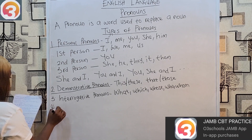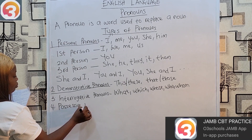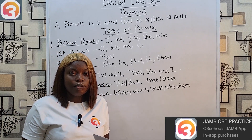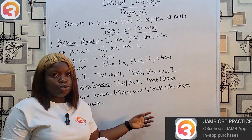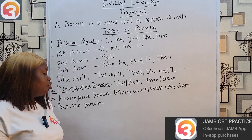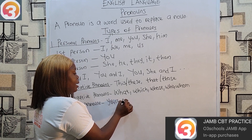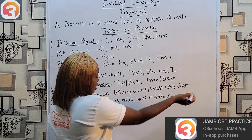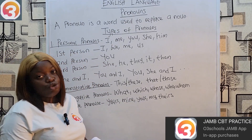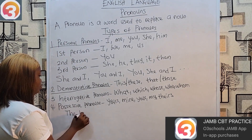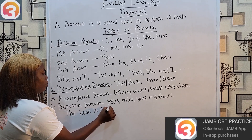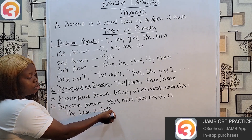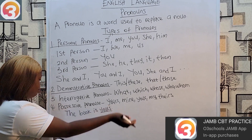Four: we have possessive pronouns. Possessive pronouns are used to show possession or ownership — to say that whatever is being talked about belongs to somebody. Examples: yours, mine, theirs. For example: 'The book is yours.' 'Yours' here is replacing 'your book' — instead of saying 'the book is your book,' we say 'the book is yours.' That is a possessive pronoun standing in place of the noun.